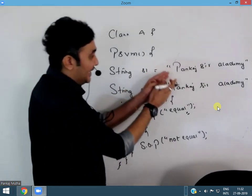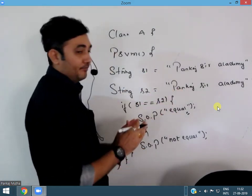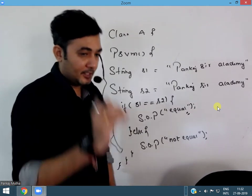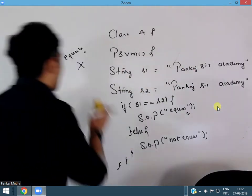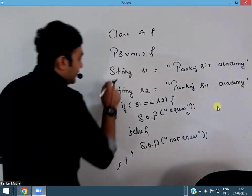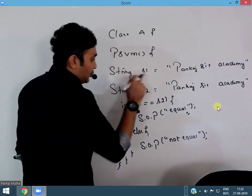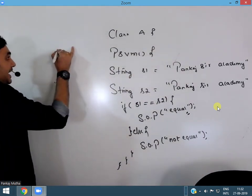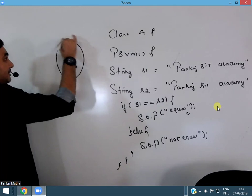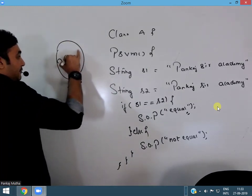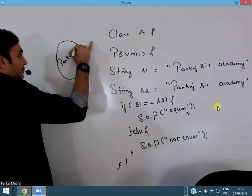It is not comparing the values and printing equal. Then what is it comparing now? Observe carefully what happens in Java. When I write string S1, it would ideally create an object and in that it would store Pankatsar